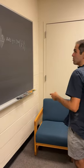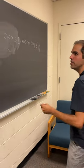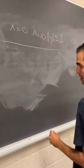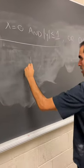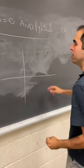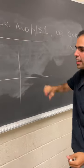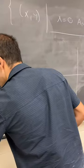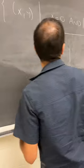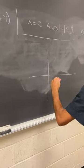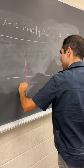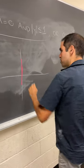Okay, notice this graph has two parts. There is this segment, which is just a segment where x equals zero and y is less than or equal to one — just this part here.